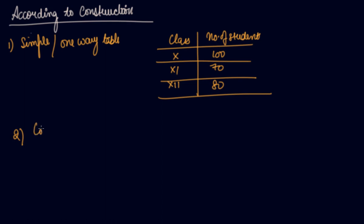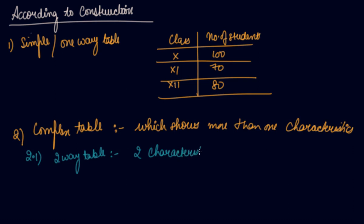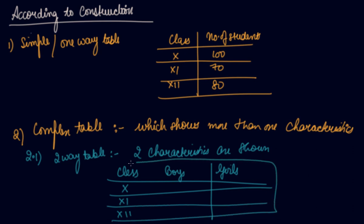The second is the complex table. Complex tables are tables which show more than one characteristic, so these are known as complex tables. The first type of complex table is the two-way or double table. Two-way tables are tables in which two characteristics are shown — for example, class (10th, 11th, 12th) along with boys and girls. You have divided the number of students into two characteristics: boys and girls. So this is your two-way table.